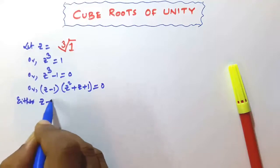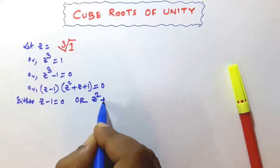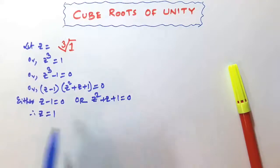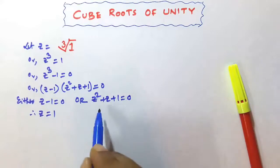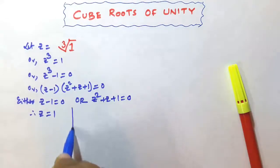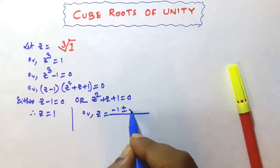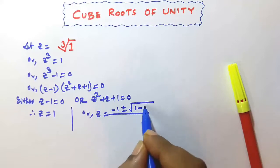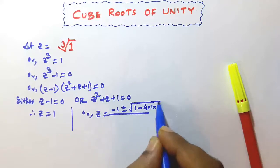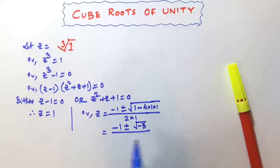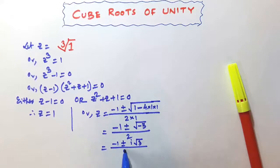Either z minus 1 is equal to 0, or z squared plus z plus 1 is equal to 0. Therefore z is equal to 1 — this is the real root. The other roots come from z squared plus z plus 1 equals 0, giving z equal to minus 1 plus or minus root over 1 minus 4 divided by 2, which equals minus 1 plus or minus i root 3, all divided by 2.